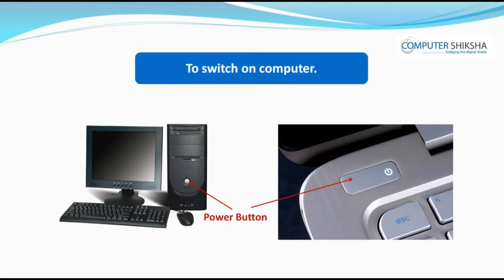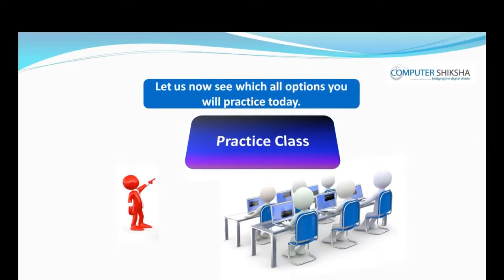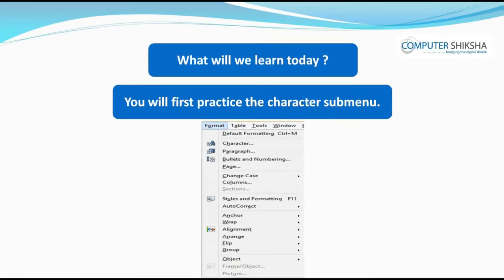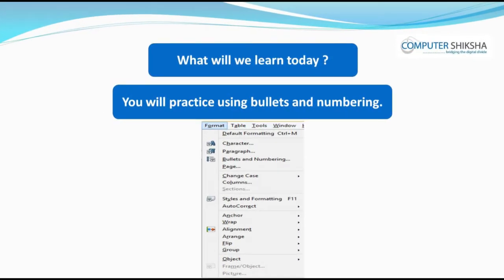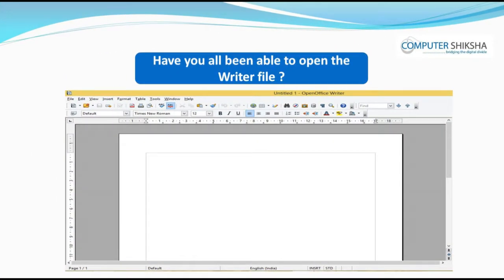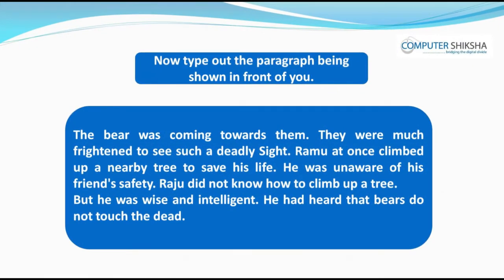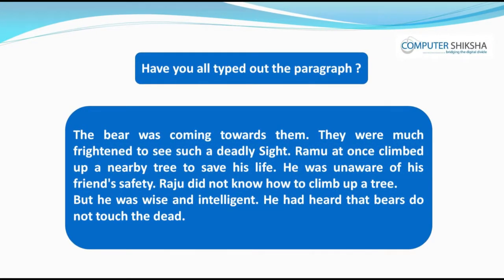Next, all of you power on your computer and using the method told to you, open the writer file. Let us now see which options you will practice today. You will first practice the character submenu, then some options of the paragraph, then bullets and numbering, and finally some options of the page. Have you all been able to open the writer file? If you are facing problems, you can ask for help. Now type out the paragraph being shown in front of you.